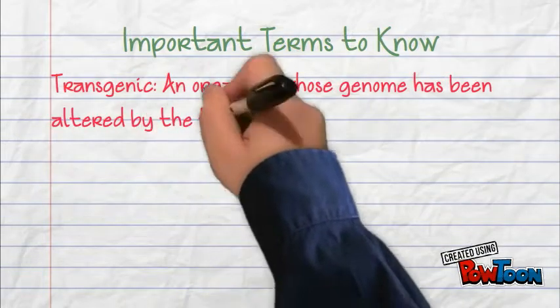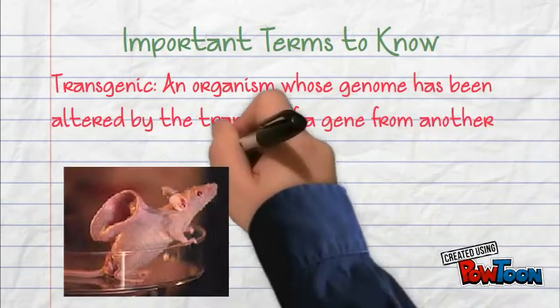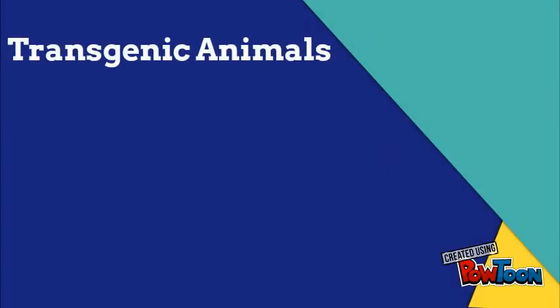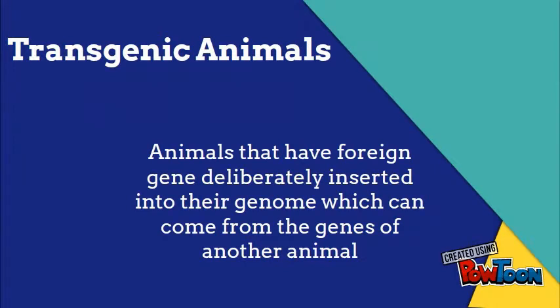This includes transgenic plants and organisms. However, in this video, we are only addressing transgenic animals. From the definition of transgenic, you can guess that transgenic animals are animals that have foreign genes deliberately inserted into their genome, which can come from the genes of another animal.